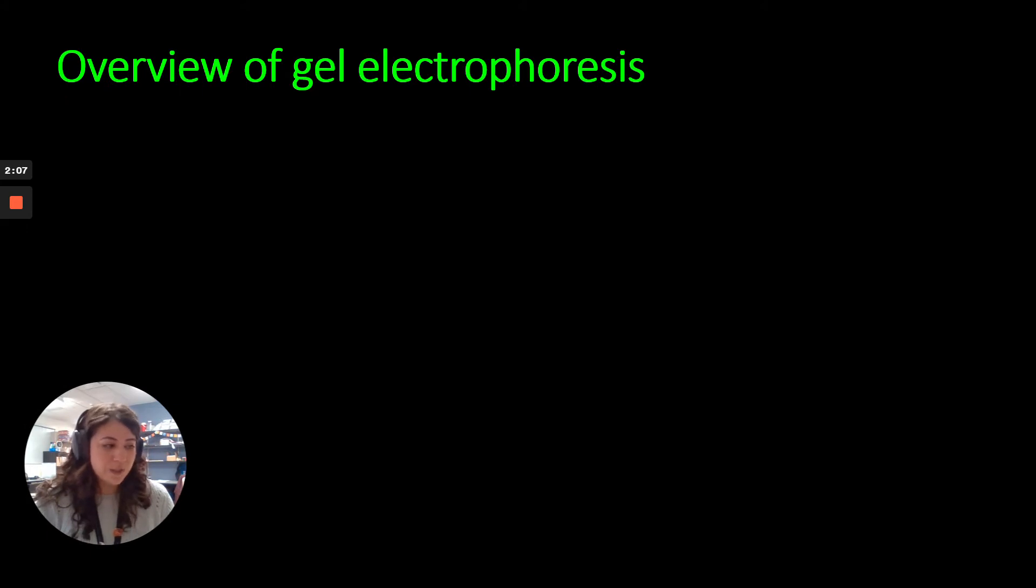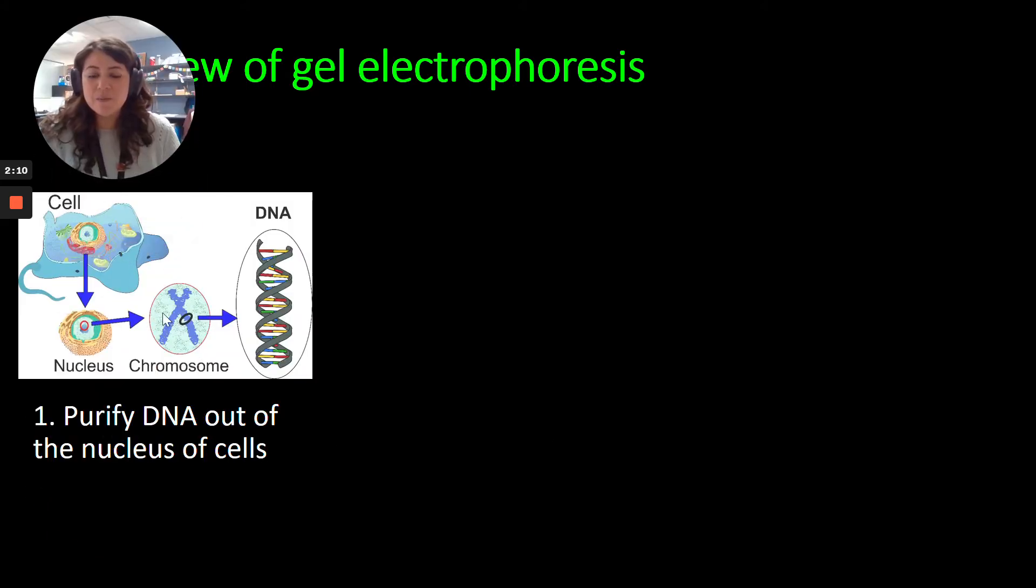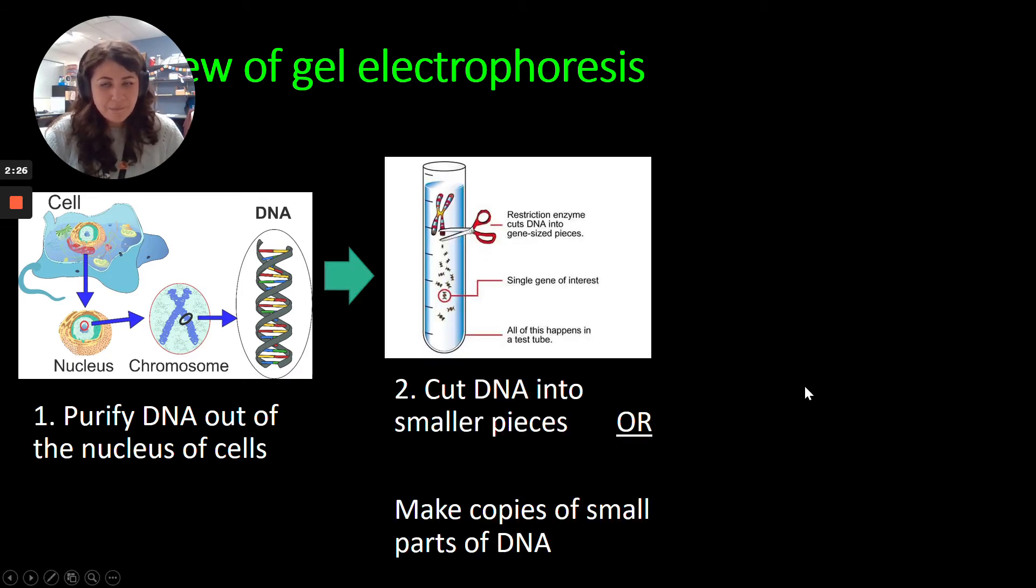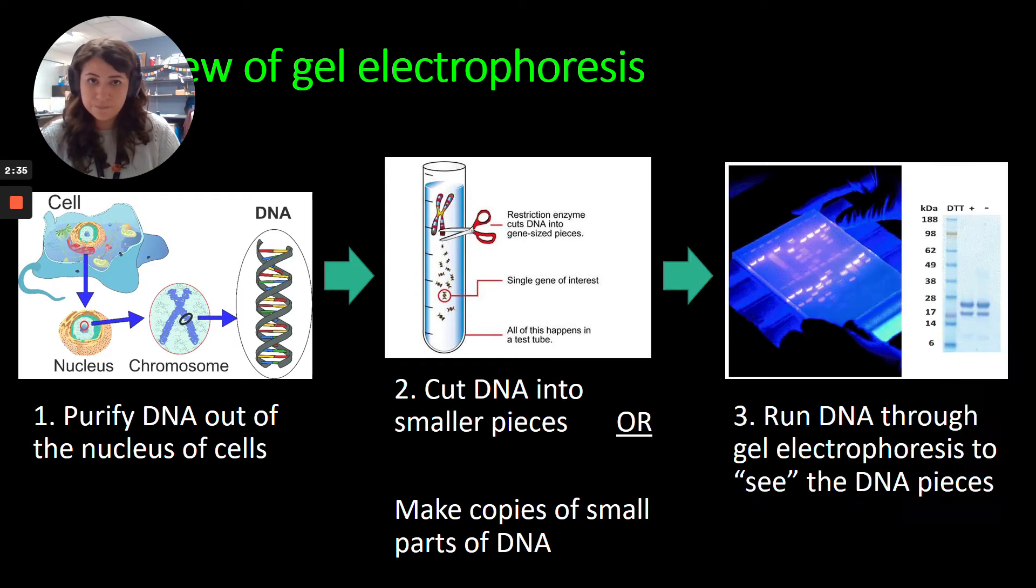So how does gel electrophoresis work? So first thing first is we'll take some cells, and we have to get that DNA out of the cells. Because remember, gel electrophoresis isn't happening inside of our cells as a tool. So you'll take some cells maybe from a cheek sample and extract all of the DNA out of those cells. And then you will do something that modifies the DNA in some way. So, for example, you could cut the DNA into smaller pieces, or you could make copies of certain parts of the DNA. And then you will take your little DNA bits and run them on a gel. And we get this picture where we can see the bands of DNA.